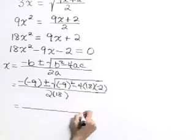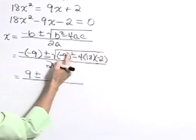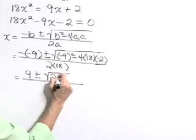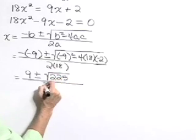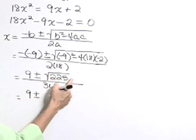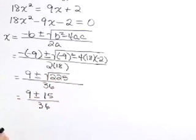This gives a positive 9 plus or minus. Underneath this radical we get 225. So that's the square root of 225 all over 36. This gives 9 plus or minus the square root of 225 is 15 all over 36.